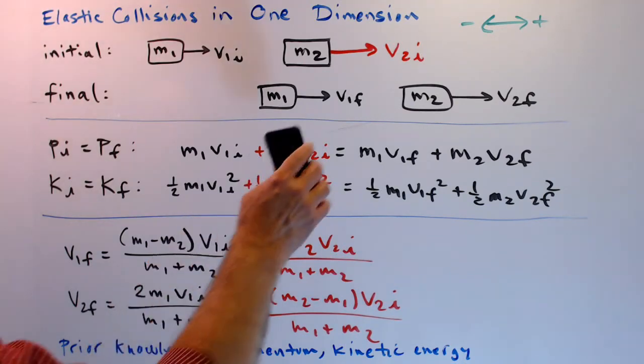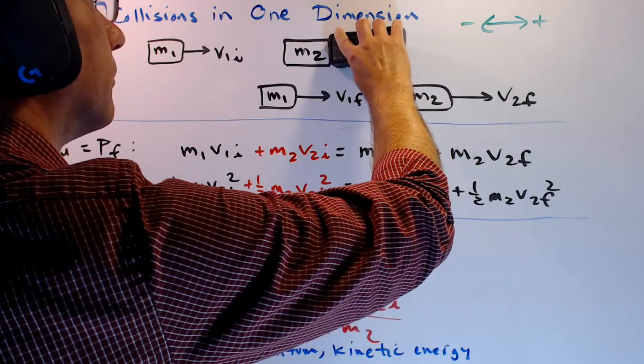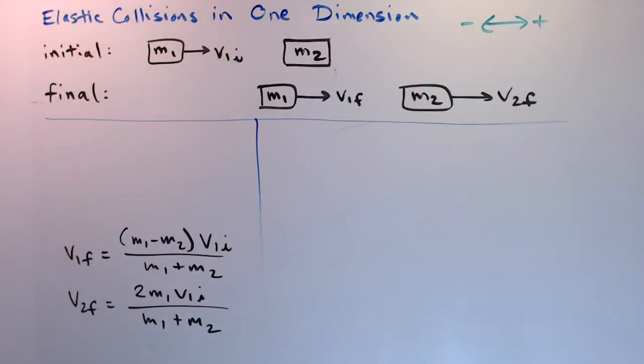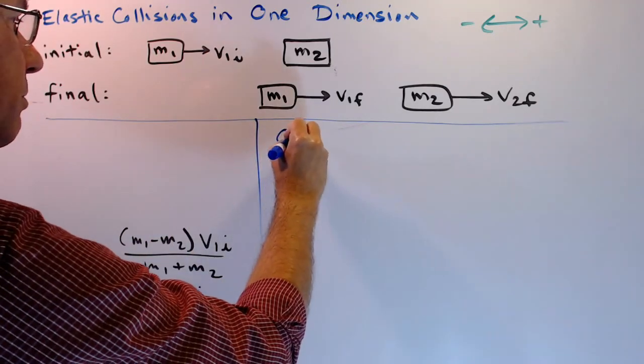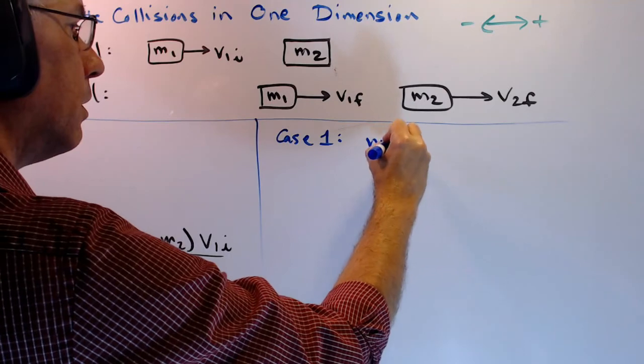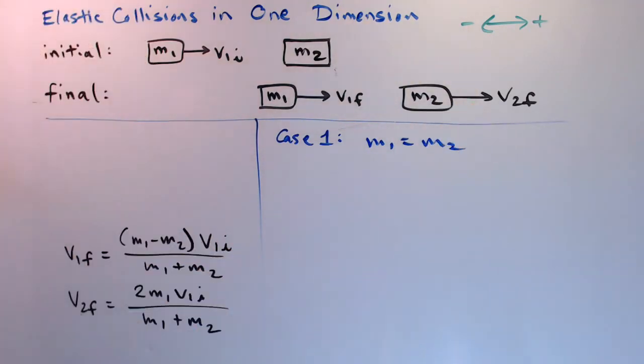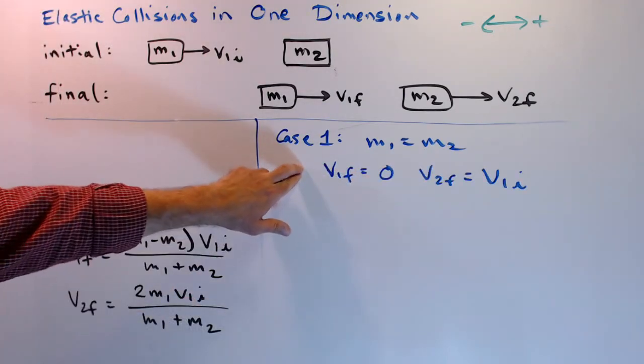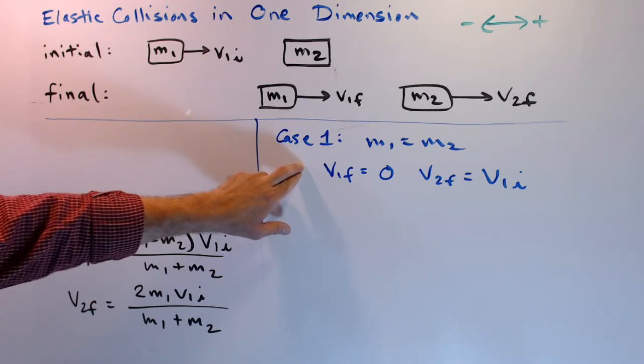Now let's take another look at that special case. There are actually three special cases of the special case that I would like to take a look at. Case one, mass one equals mass two. I mentioned this before. If m1 equals m2, v1 final is zero and v2 final is just equal to v1 initial. This is what happens sometimes when billiard balls bounce off of each other.